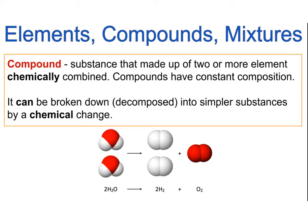When it comes to compounds, we're talking about substances that are made out of two or more elements chemically combined. This is important — those atoms should be chemically combined to form a compound. Compounds have constant composition: for example, water H2O has one oxygen to every two hydrogens, and you cannot change that ratio — it will always be the same.